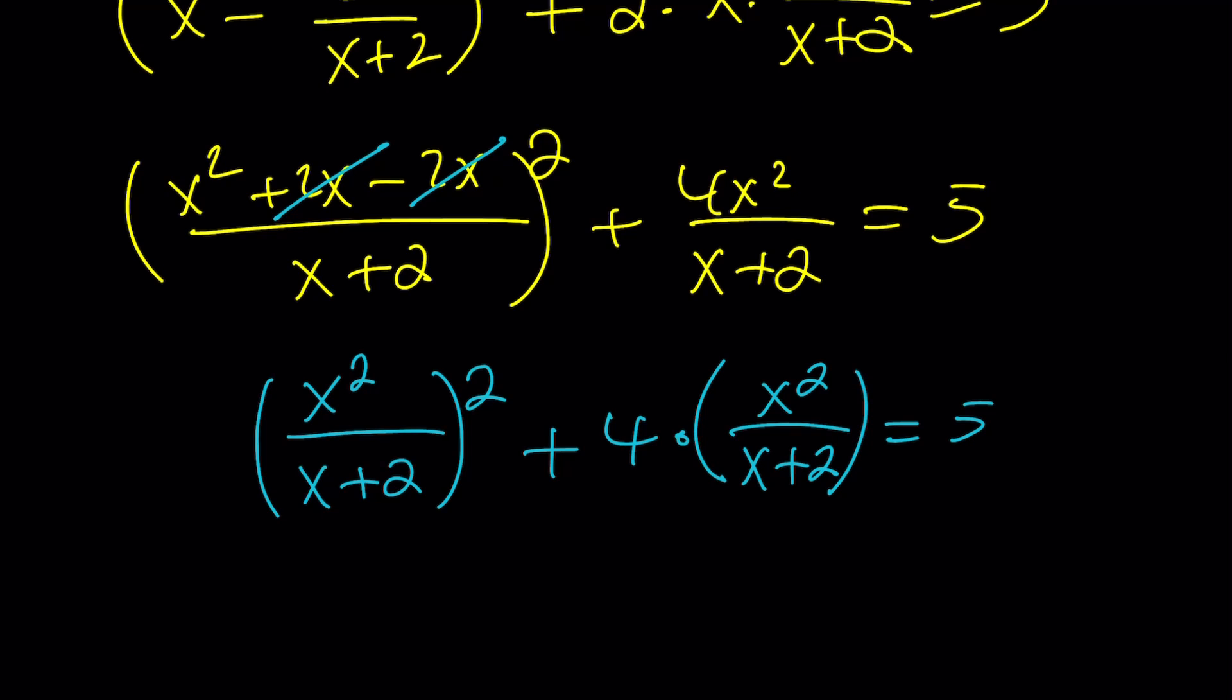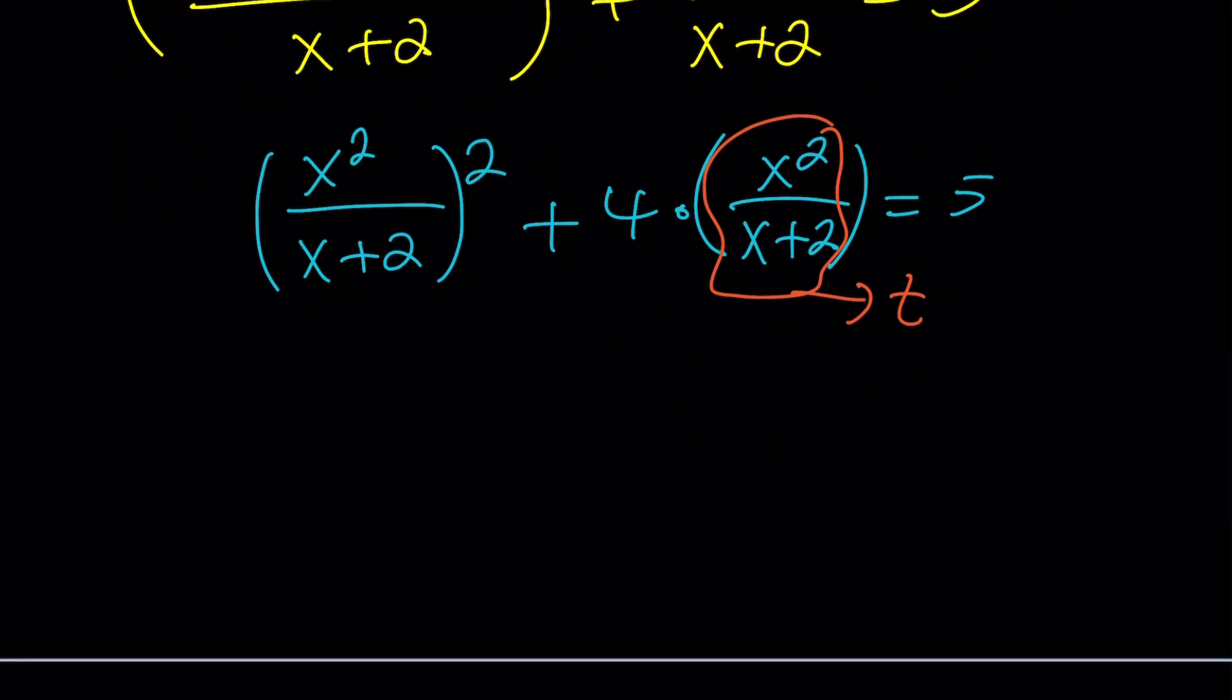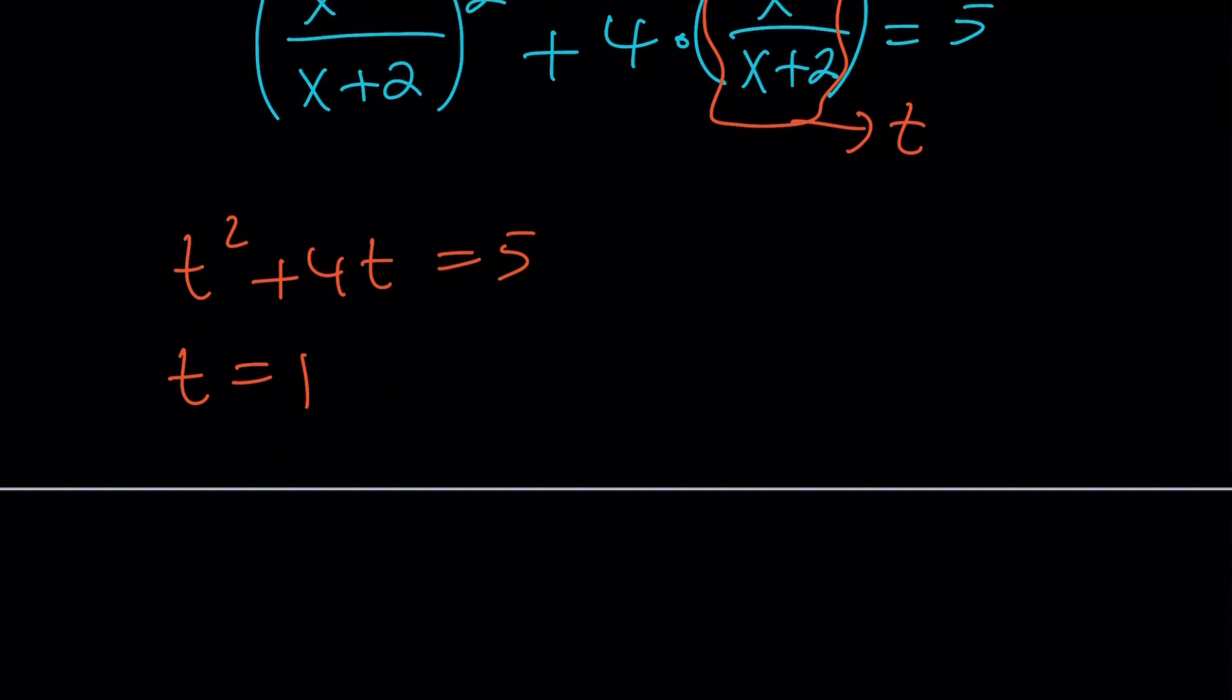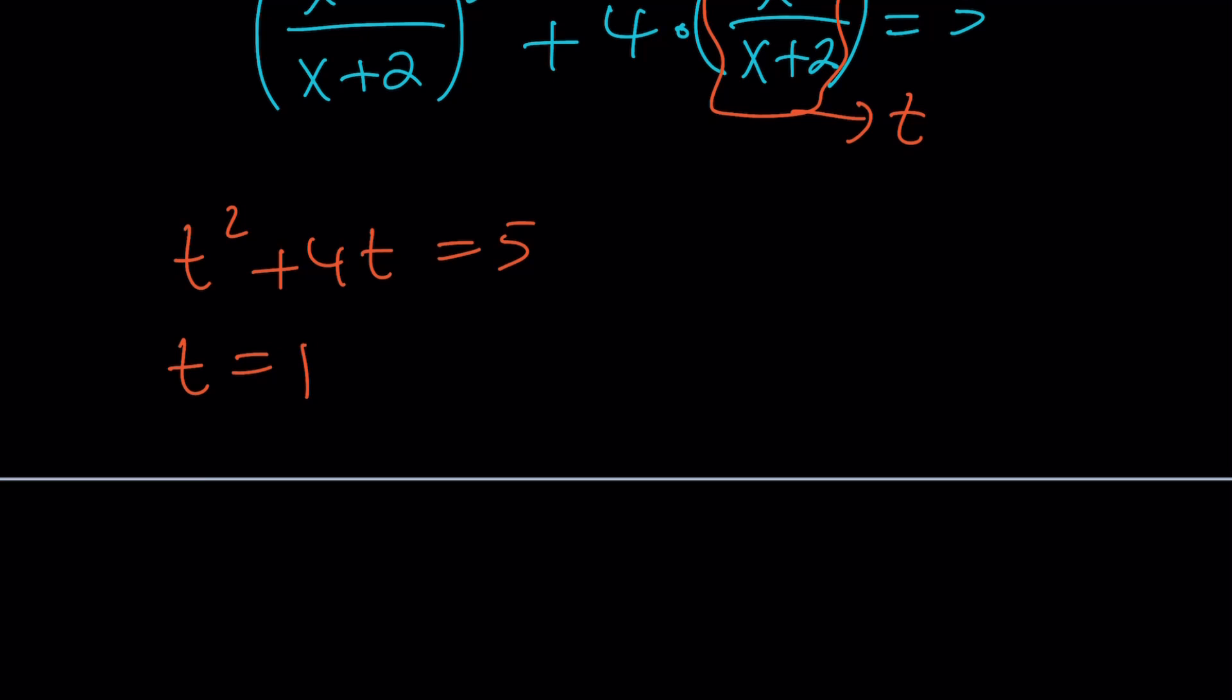We're going to use substitution. Let's go ahead and call this something. How about t? Let's call this t. You can also call it coffee if you want, but I call it t. And now this gives me t² + 4t = 5. You probably notice t = 1 is an obvious solution because of sum of coefficients. And the other one is going to be -5. So there are two solutions.